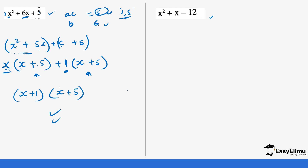Now let's do the next question. Here a = 1 and c = −12, so ac = 1 × (−12) = −12, and b = +1. We need two numbers such that if you multiply them you get −12 and if you add them you get 1. The multiples of 12 include 4 and 3 — since 4 − 3 = 1, our two numbers are 4 and −3: 4 × (−3) = −12 and 4 + (−3) = 1.